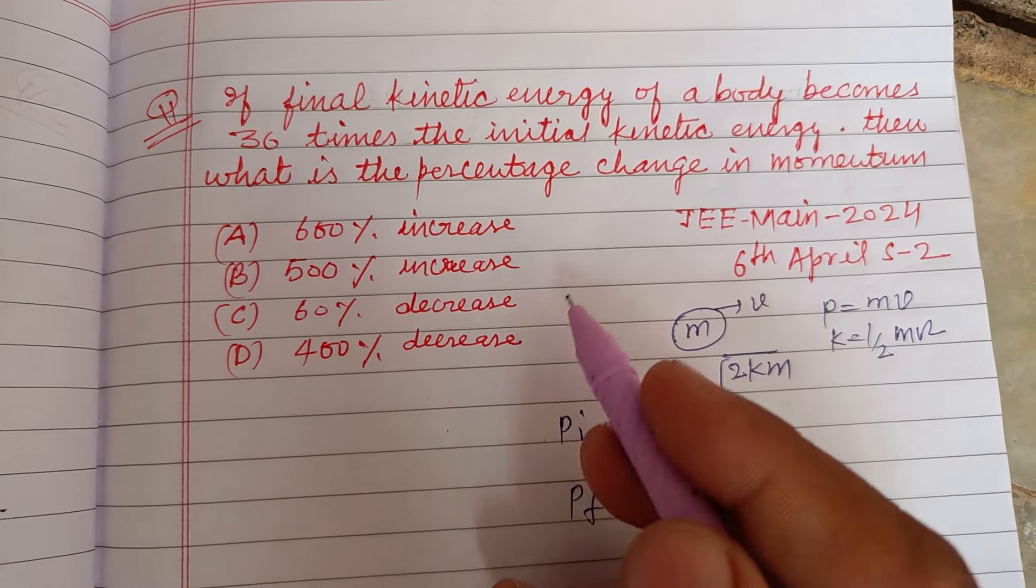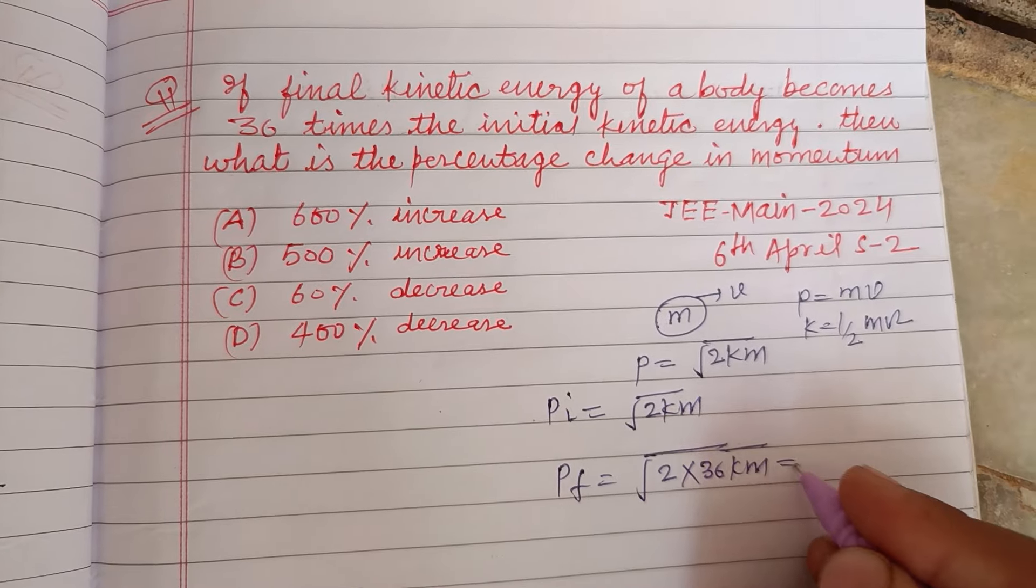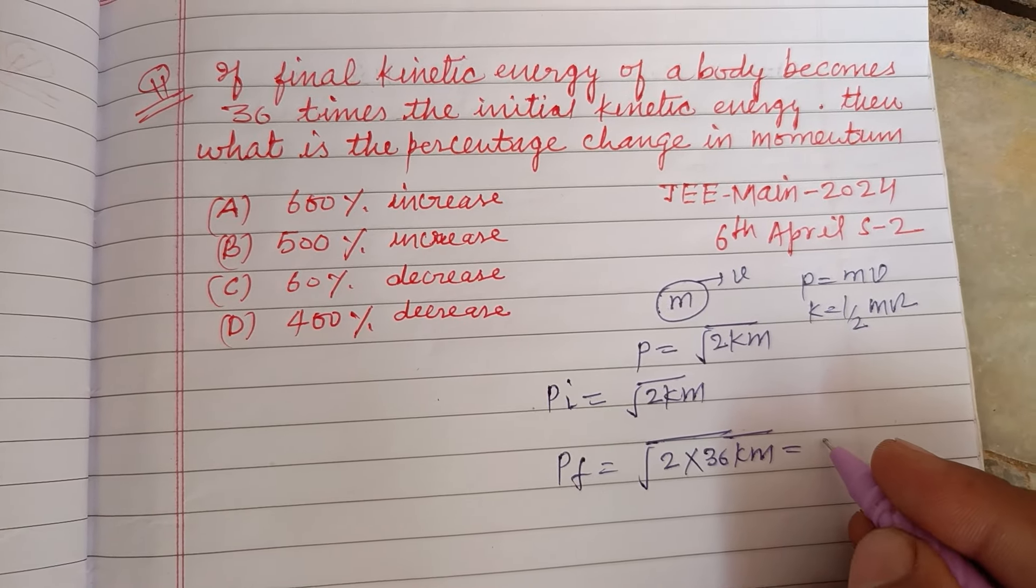The square root of 36 is 6, so 6 times square root of 2km.